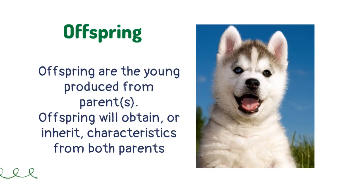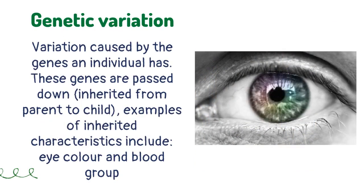Offspring are the young produced from parents. Offspring will obtain, or inherit, characteristics from both parents. Variation caused by the genes an individual has — these genes are passed down by being inherited from parent to child. Examples of inherited characteristics include eye color and blood group.